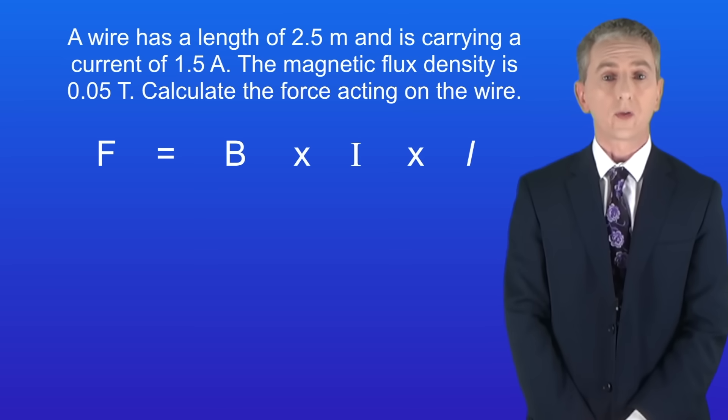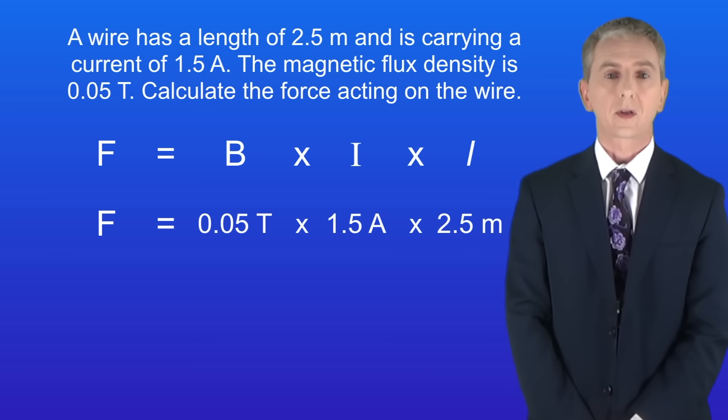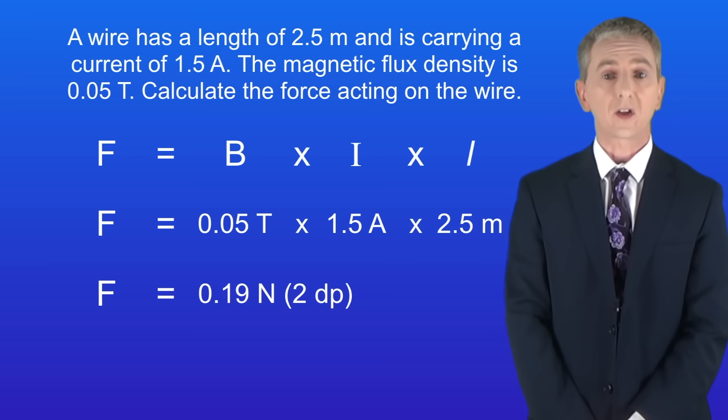Okay, as we said before, the force equals the magnetic flux density multiplied by the current multiplied by the length. The magnetic flux density is 0.05 tesla, the current is 1.5 amperes, and the length is 2.5 meters. Putting these into the equation gives us a force acting on the wire of 0.19 newtons to two decimal places.